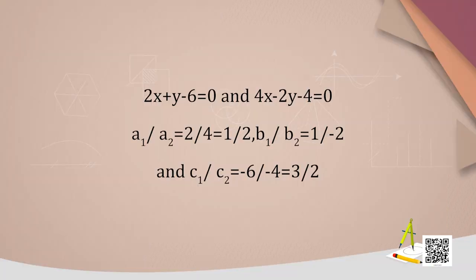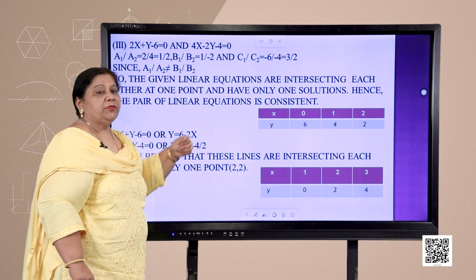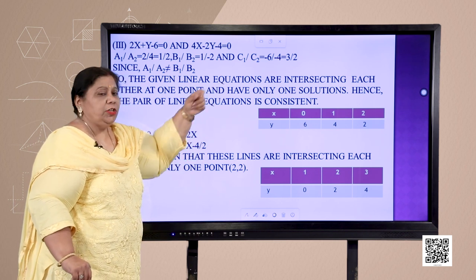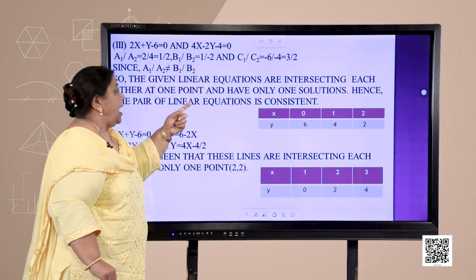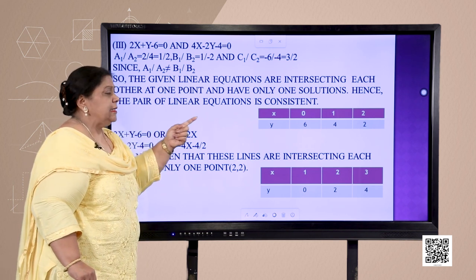Let us look into the next part: 2x + y − 6 = 0 and 4x − 2y − 4 = 0. We have a1/a2 = 2/4 = 1/2, b1/b2 = 1/(−2), and c1/c2 = (−6)/(−4) = 3/2. Since a1/a2 ≠ b1/b2, this is the case of unique solution. The linear equations are intersecting each other at one point and have only one solution. Hence the pair of linear equations is consistent.